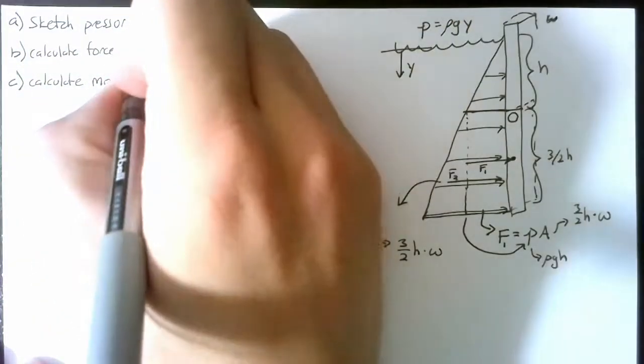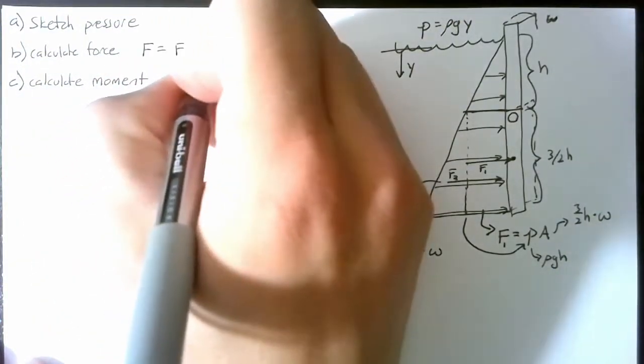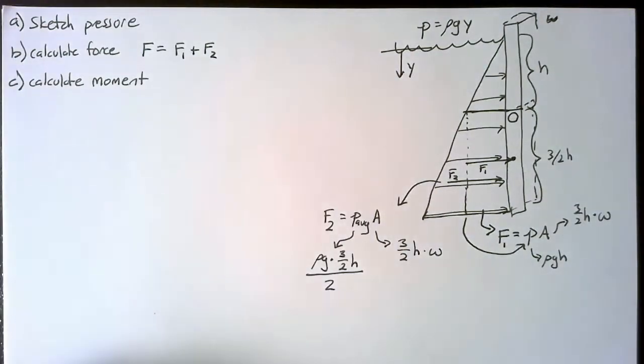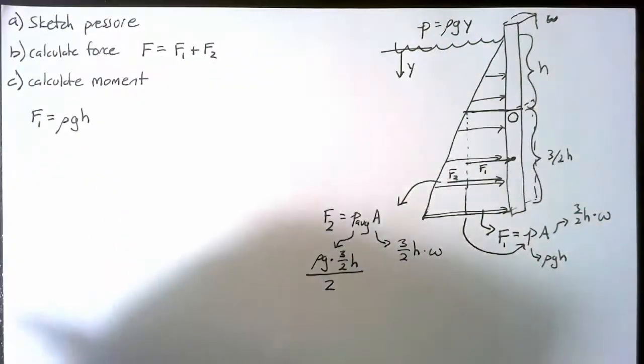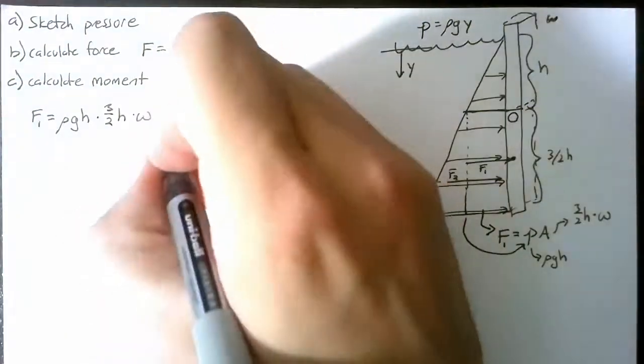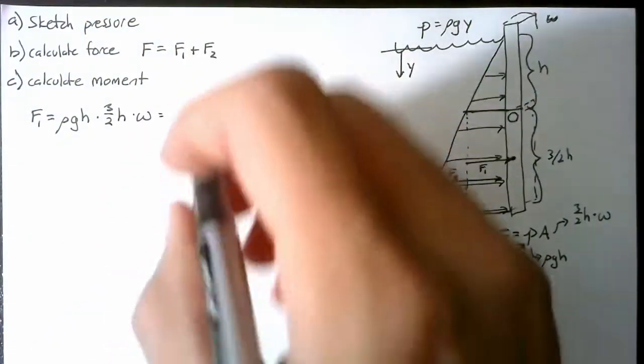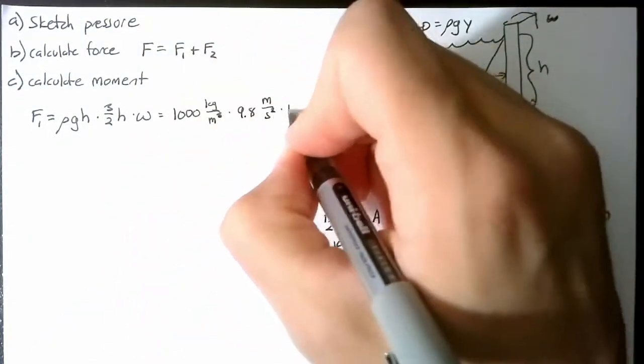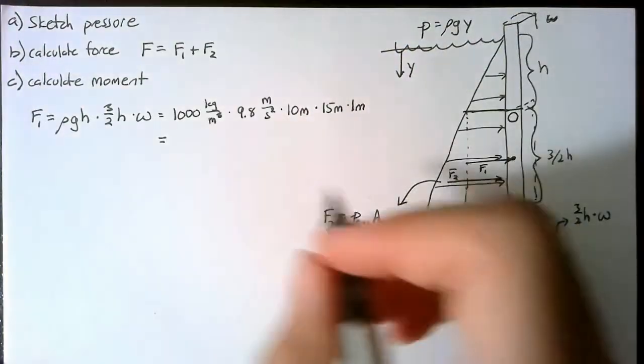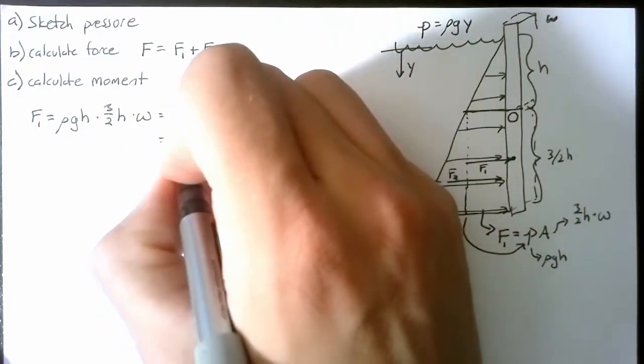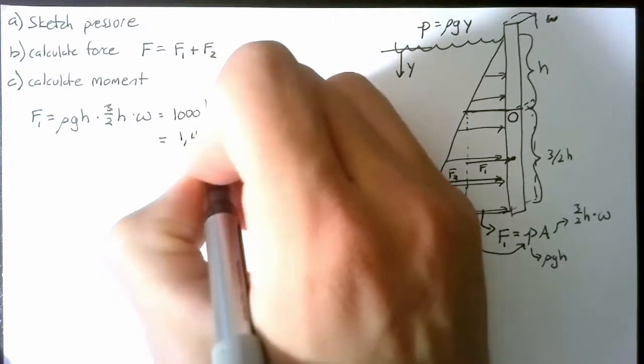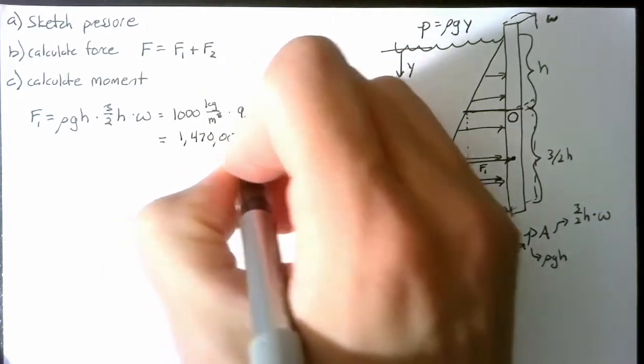So our force is simply F1 plus F2. So let's calculate all this out. And we'll use the same constants as before. We plug this into the calculator, and we end up with 1,470,000 newtons.